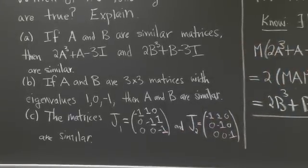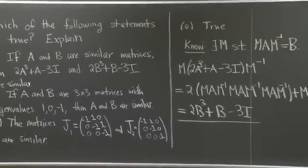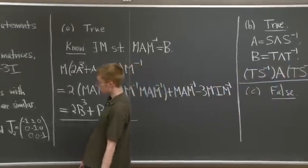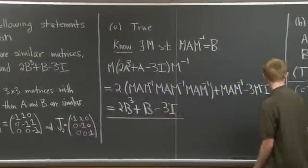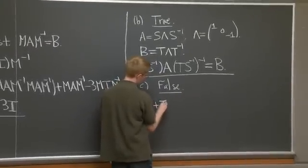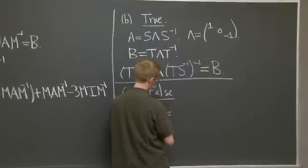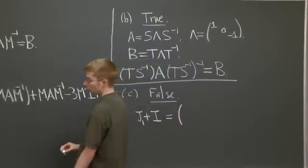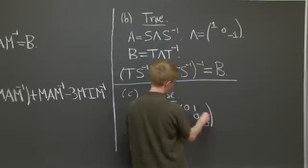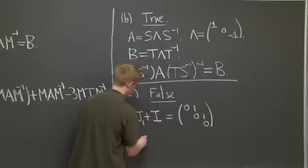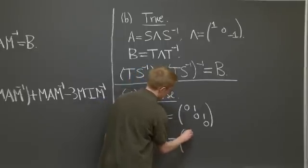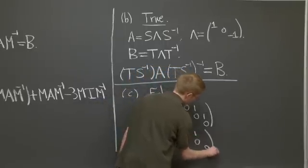So let's look at, remember one of the things that similarity preserves are eigenvectors and eigenvalues. So let's look at the eigenspace with eigenvalue minus 1 with these two matrices. So J1 plus the identity, let's look at the null space of this matrix. So this is just 0's on the diagonal, and 1's right above the diagonal. And J2 plus the identity, this is just 0, 1, 0, 0.